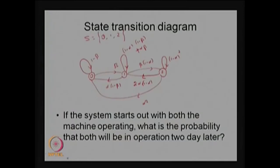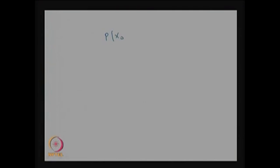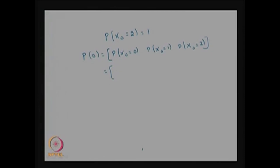At time 0 (the 0th step), both machines are operating, therefore X0 = 2 with probability 1. This can be expressed as the initial probability vector: the probability of being in state 0 is 0, state 1 is 0, and state 2 is 1 — giving the vector [0, 0, 1].